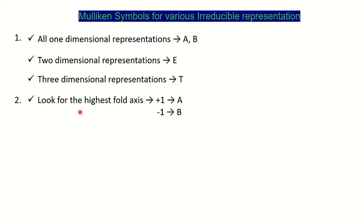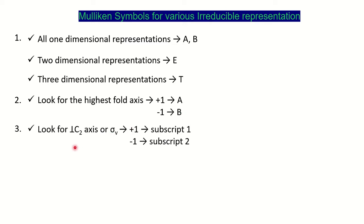The second rule or step is: once you decide whether it is one-dimensional, two-, or three-dimensional, you have to look for the highest fold axis — that is, the principal axis of rotation. If the character given for the principal axis of rotation is plus one, the symbol will be A; if it is minus one, then it is B.